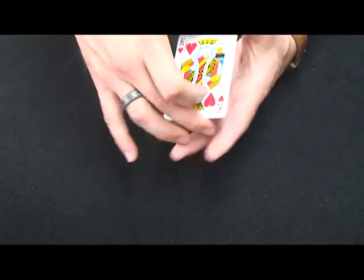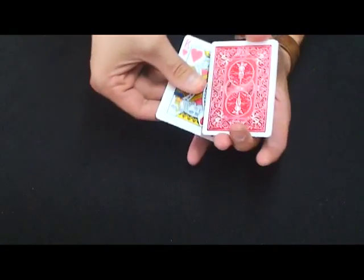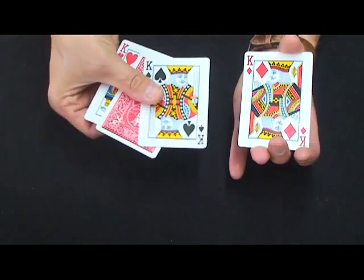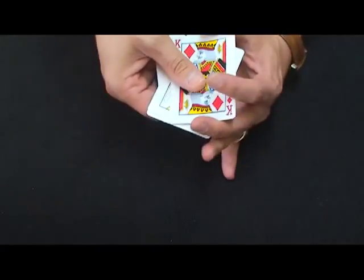We're going to square up the pack like this, and you'll see that this time one of the kings turns face down, and it is the king of clubs.